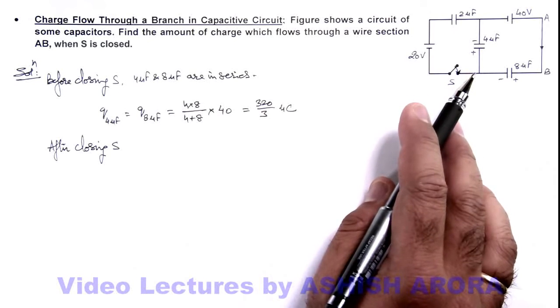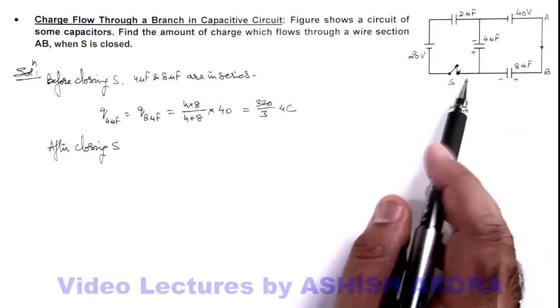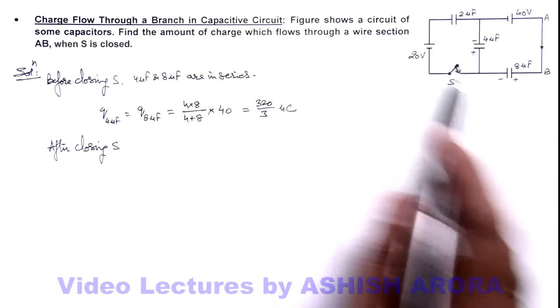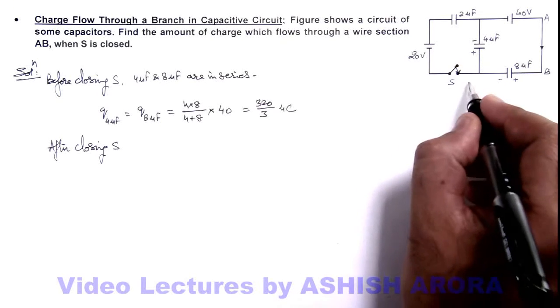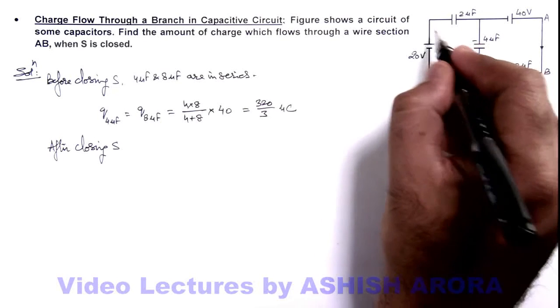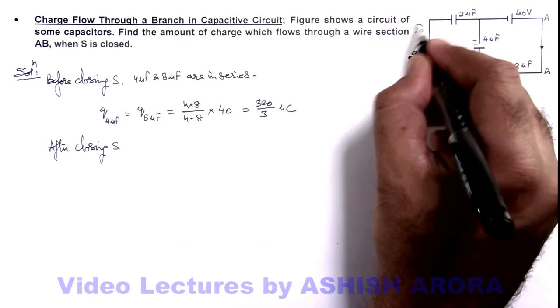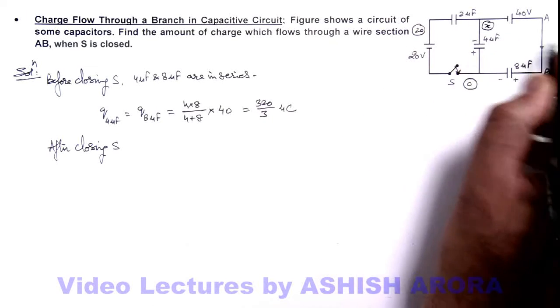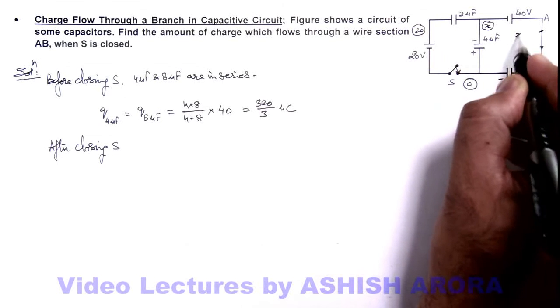When the switch is closed, the 20-volt battery will also be connected across it. In this situation, we can find out the final charges on capacitors by using nodal analysis. Here we can consider potential to be zero, here potential to be 20, and at this node we can take potential to be x. So here, potential will be x plus 40.